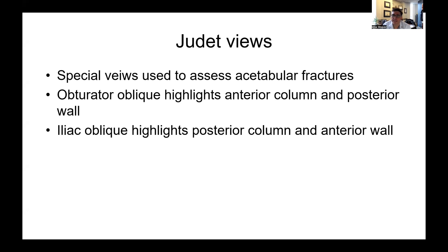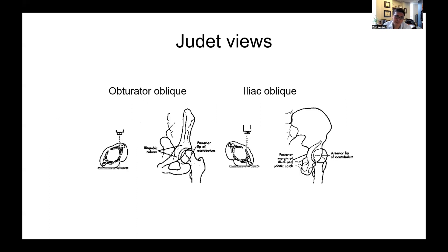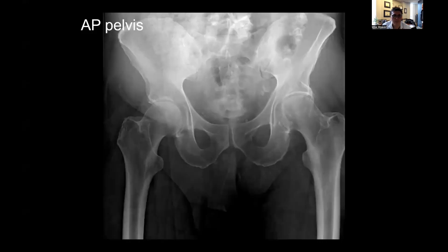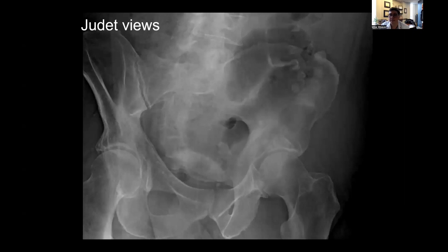Para el acetábulo, además de la pelvis AP, utilizamos imágenes avanzadas: las vistas Judet, que son básicamente vistas ortogonales de la pelvis a 45 grados. El obturador oblicuo es con el paciente girado 45 grados hacia el haz de rayos X, mirando hacia el anillo obturador; el oblicuo ilíaco es lo contrario. Aquí está el ejemplo de un paciente con fractura de acetábulo: es un poco difícil de ver en la AP, pero involucra el lado izquierdo, así que se obtienen vistas Judet para entenderlo mejor.